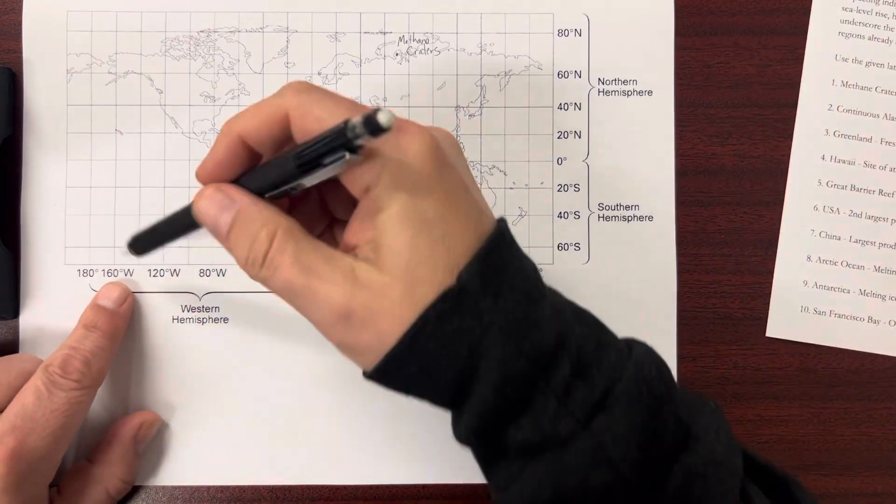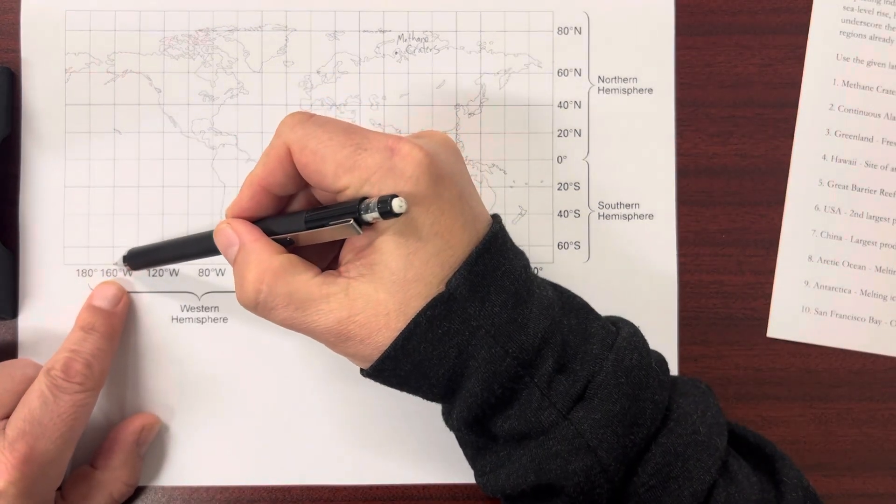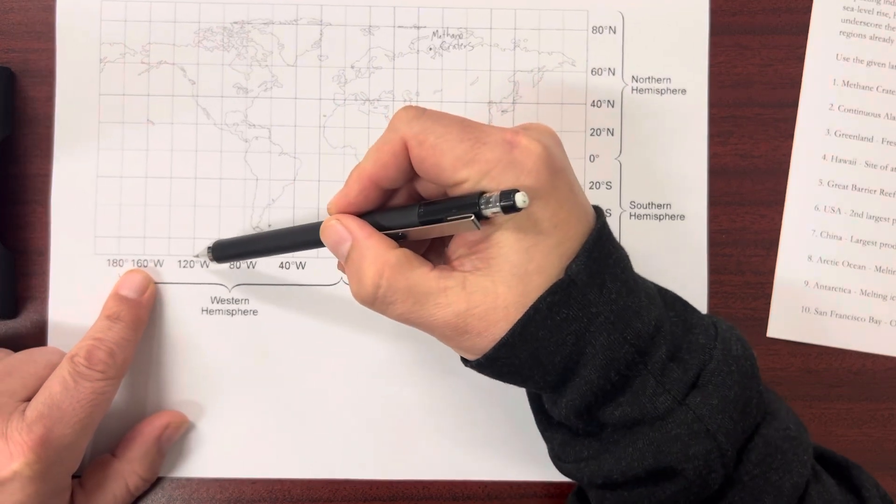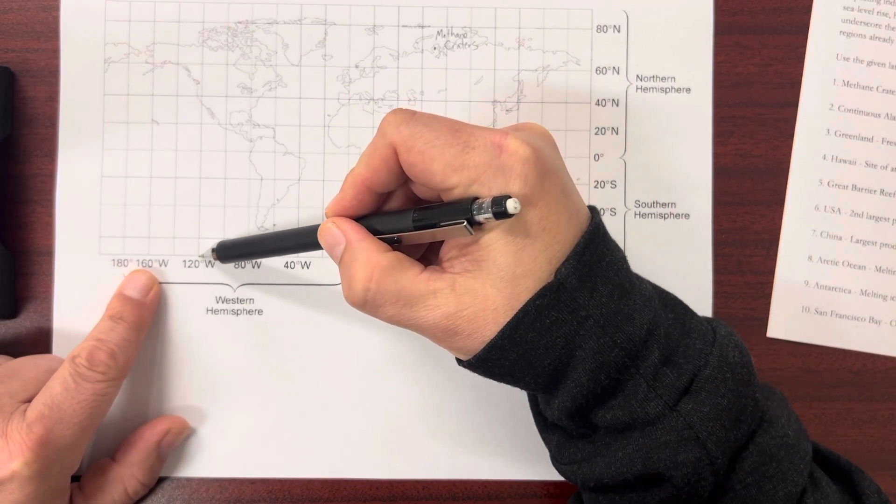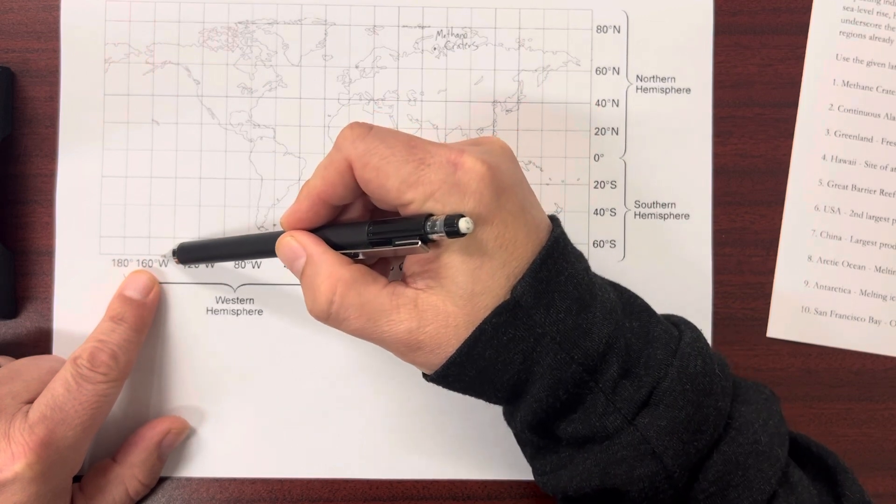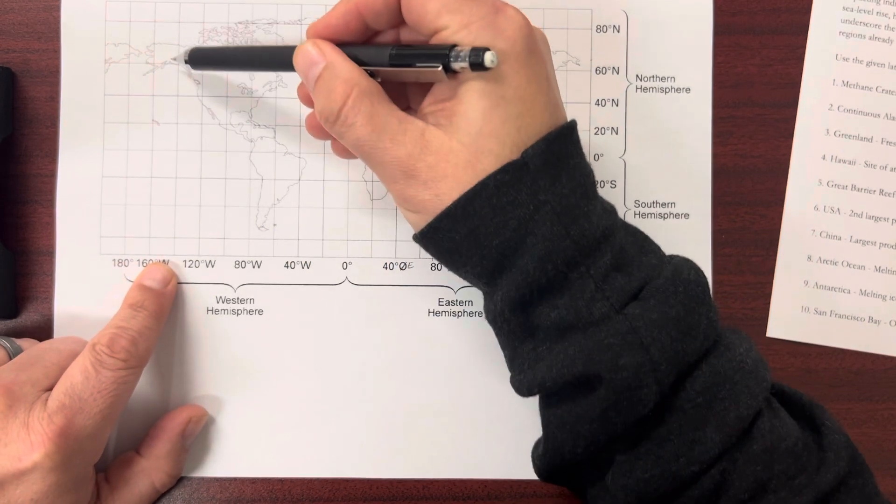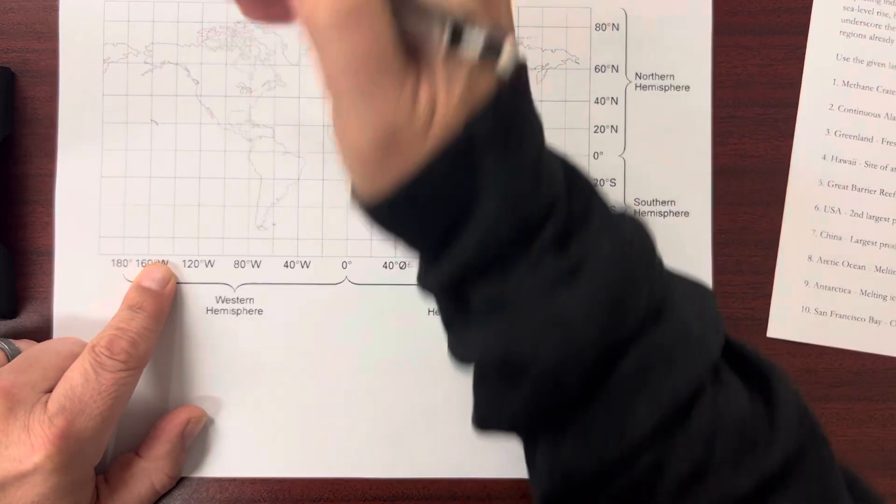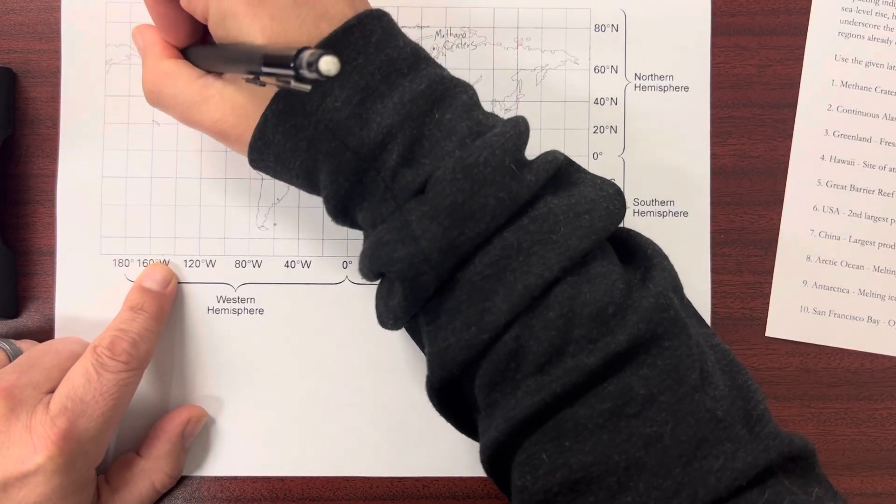And 150 west. Well, here's 160, here is 120. In between them would be 140. So 150 is right about there. So we try to go up and over, and we got a dot right there.